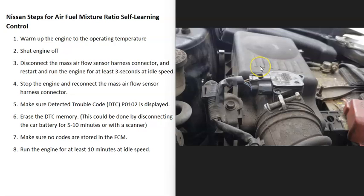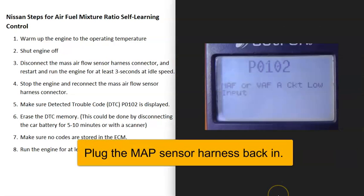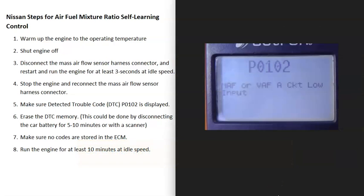What you do is you unplug it, and with it unplugged, you restart the engine and let the engine run for three to five seconds or so. Then you shut the engine off. You should get an engine light, and if you check your code, you should get a P0102 code, which is for the mass sensor.